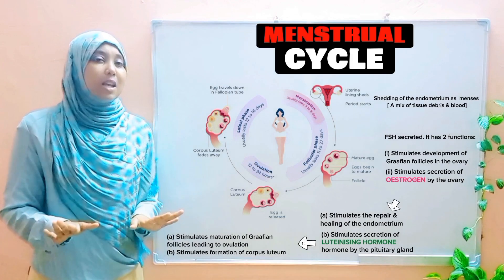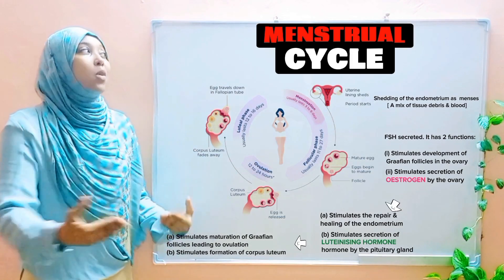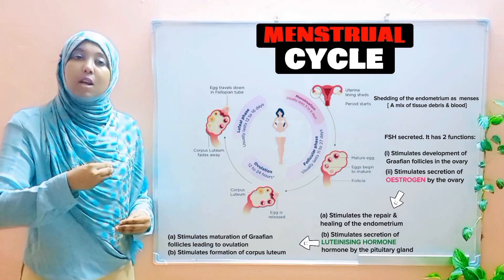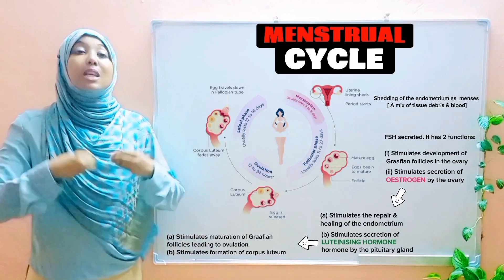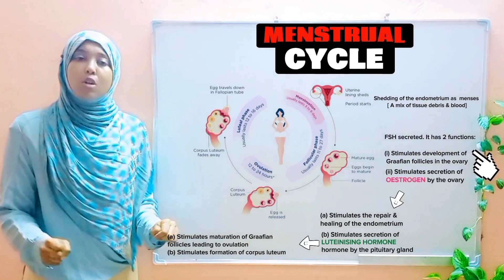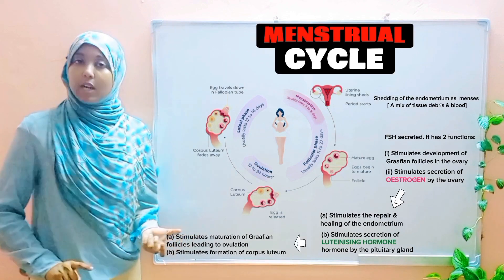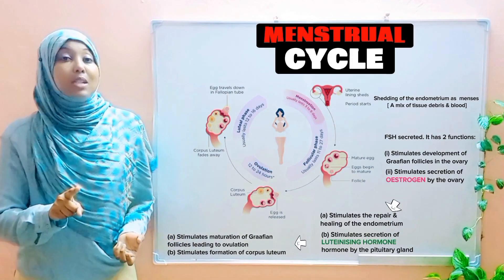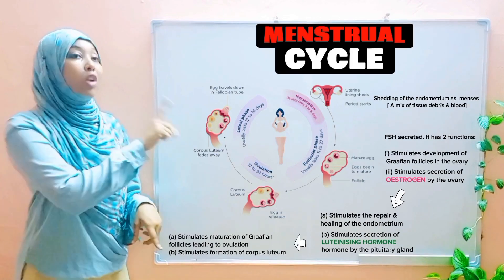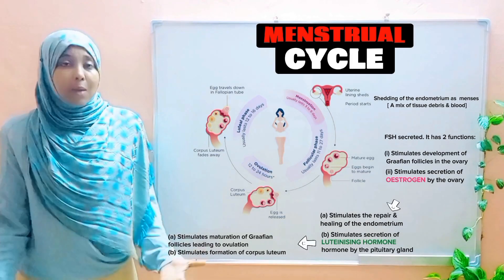Remember, FSH is the hormone that triggers the whole cycle — it stimulates the development of the graafian follicle, which ultimately leads to the release of the egg cell into the oviduct. If FSH cannot function, ovulation will not take place, which is exactly what should happen during pregnancy.